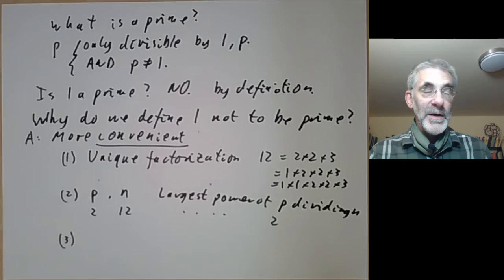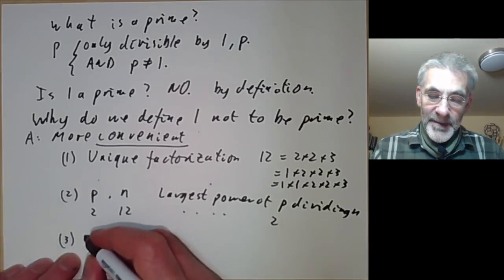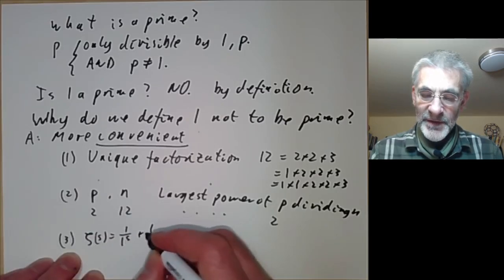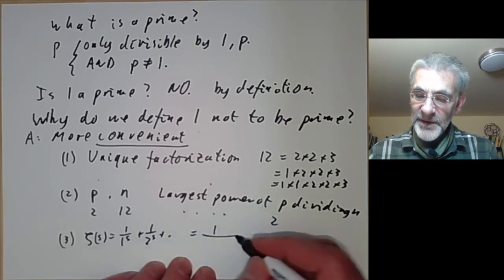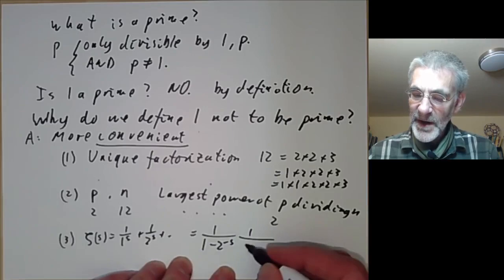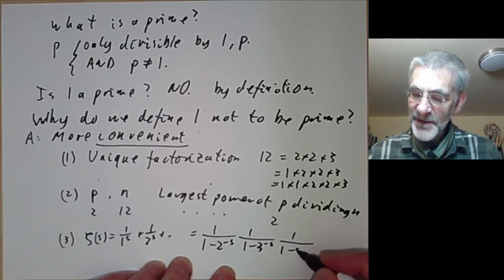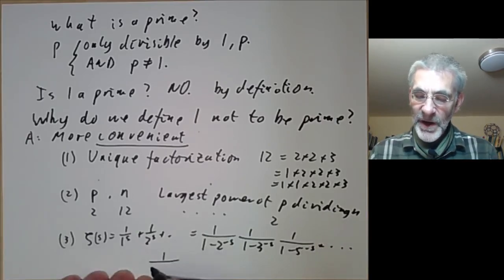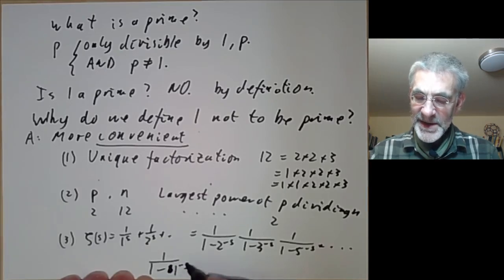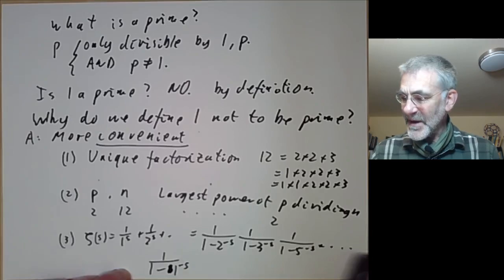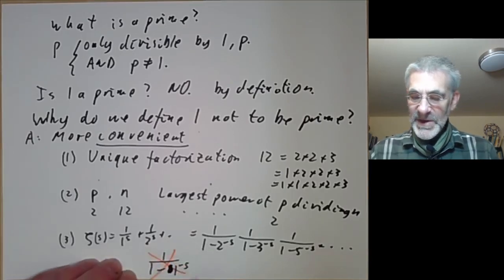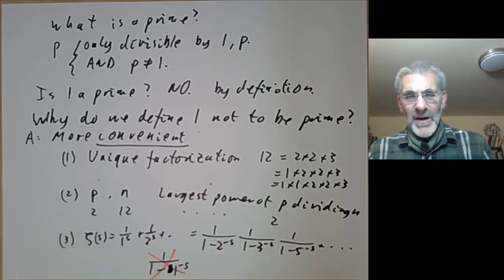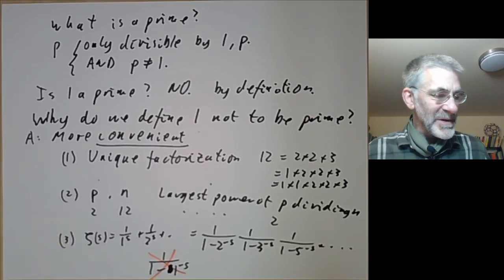A third example, a fairly typical example, is in the introduction we mentioned the Riemann zeta function which is 1 over 1 to the s plus 1 over 2 to the s and so on and this is equal to a product over primes 1 over 1 minus 2 to the minus s, 1 over 1 minus 3 to the minus s, 1 over 1 minus 5 to the minus s and so on. And if we allowed 1 to be a prime then we would get a factor of 1 over 1 minus 1 to the minus s which is 1 over 0 which is infinity which doesn't make any sense at all. So this is fairly typical of many examples where if you allow 1 to be a prime then you would just have to exclude it in your statement of a theorem.